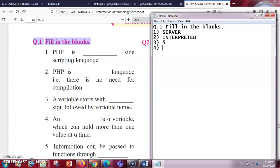Next is, dash is a variable which can hold more than one value at a time. So an array is the only variable which can hold multiple values at a single time.